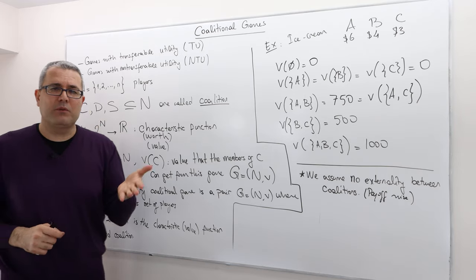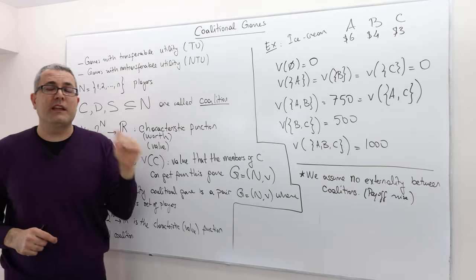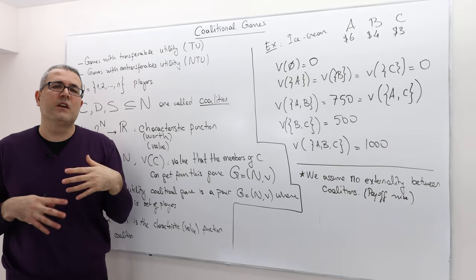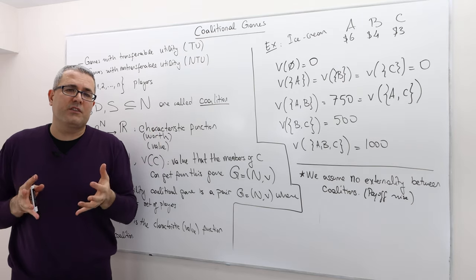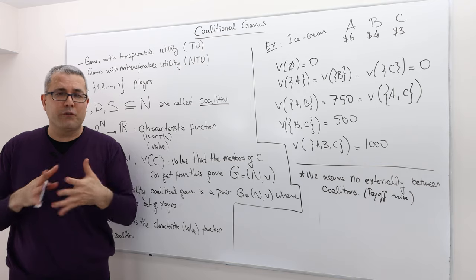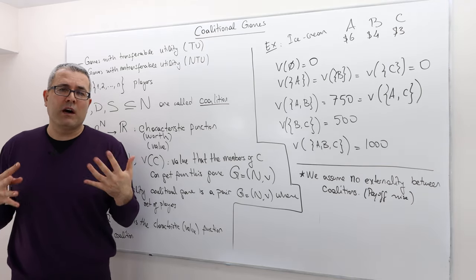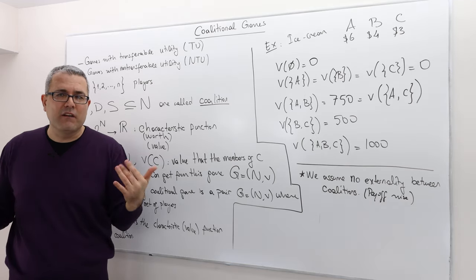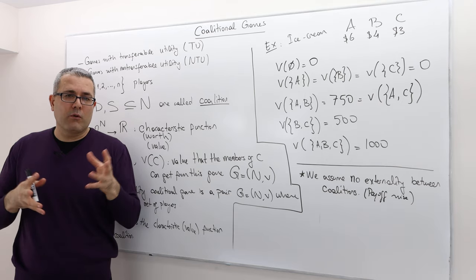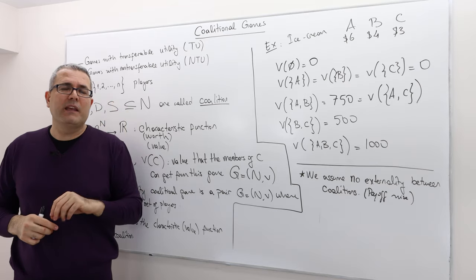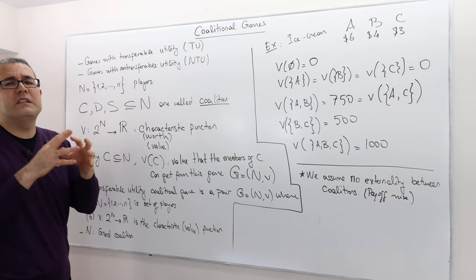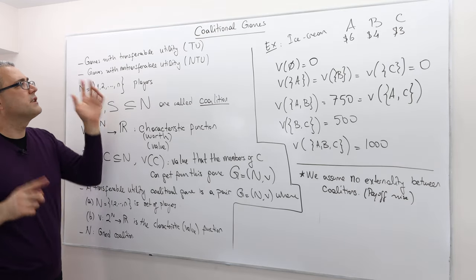All right, so the ice cream example is a perfect example which fits the transferability. In fact, all three examples I talked about at the first episode are all transferable utility, because in the ice cream example if all three get together and buy 1000 grams of ice cream they can split this in any way they like because ice cream we assume is perfectly divisible. But if it is a car that they are buying, well clearly they can't partition the car, they can't divide it. Obviously they can divide the number of days or hours they are going to own the car, so in that case we can make the game with a transferable utility. But I hope you understand what I mean.